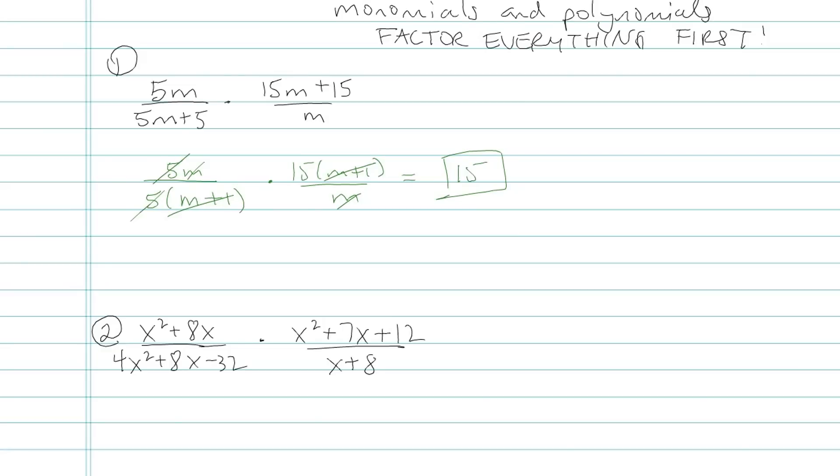Oftentimes, problems ask you for domain restrictions. Domain means numbers that x could not be, or in my case m, the values that if m were this value, I'd be dividing by 0. So I want to go back to my original problem and look at the denominators here. What would make those denominators equal to 0? Well, for the first one, if I had 5m plus 5, I'm trying to figure out what would make that thing equal to 0, m would be negative 1. That tells me that that's a domain restriction. m cannot equal to negative 1 in this problem because if it was, I'd be dividing by negative 1. And then the second fraction, I have just plain old m in the bottom.